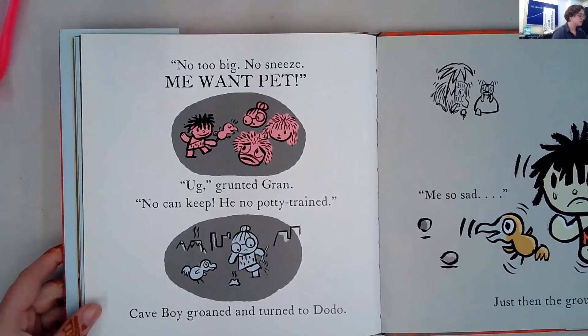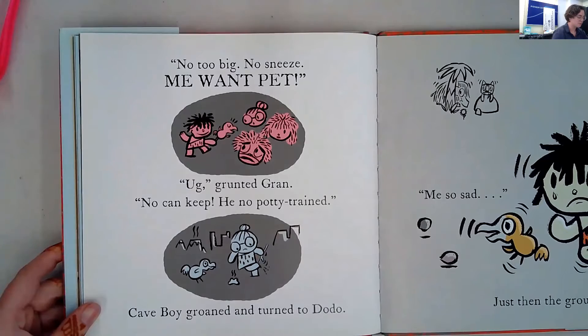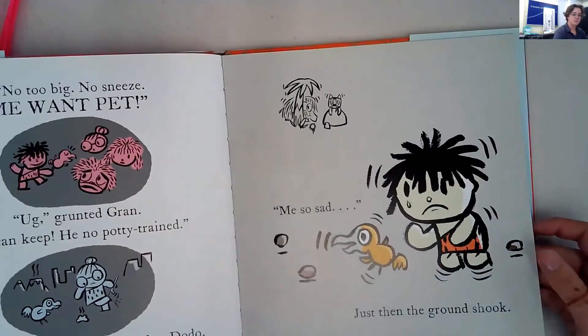'No, too big. No sneeze. Me want pet.' 'Achoo,' grunted gran. 'No can keep. No potty train.' Cave boy groaned and turned to dodo. 'Me so sad.'